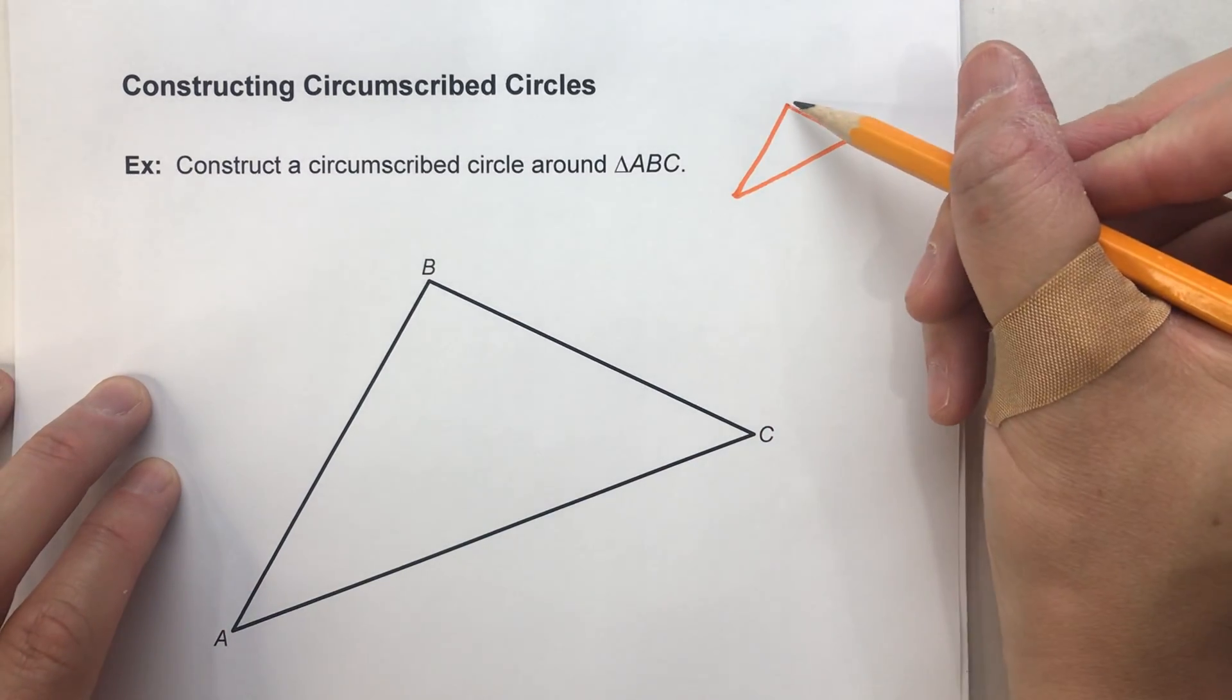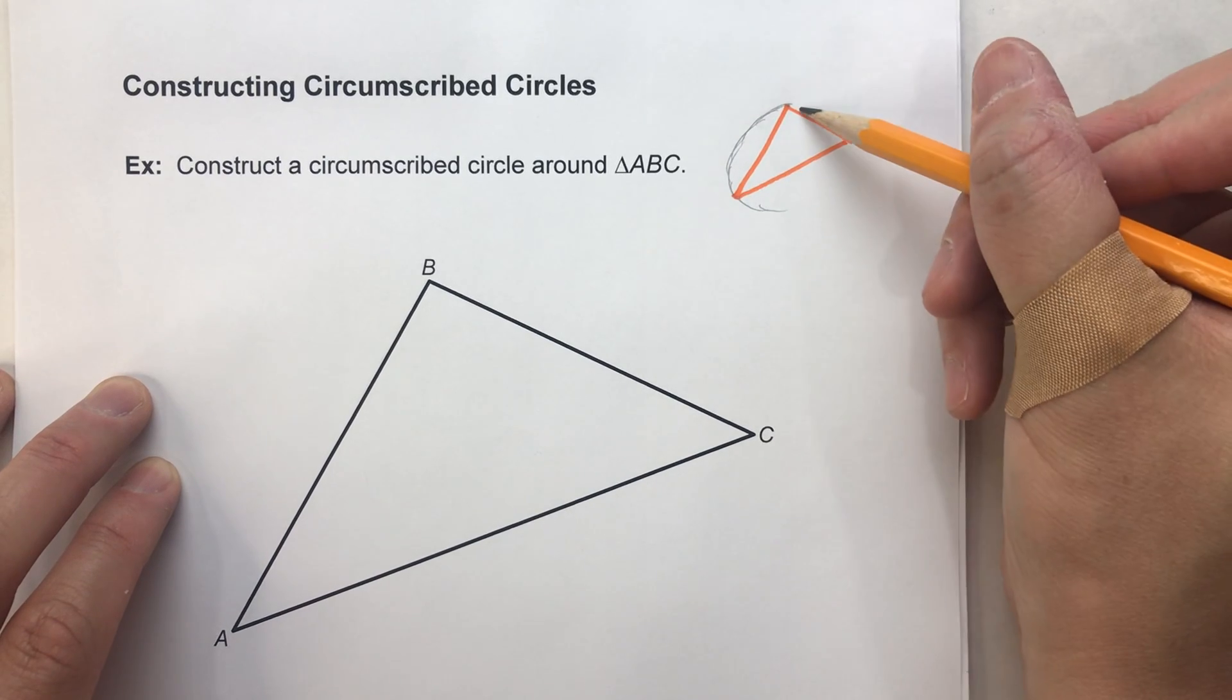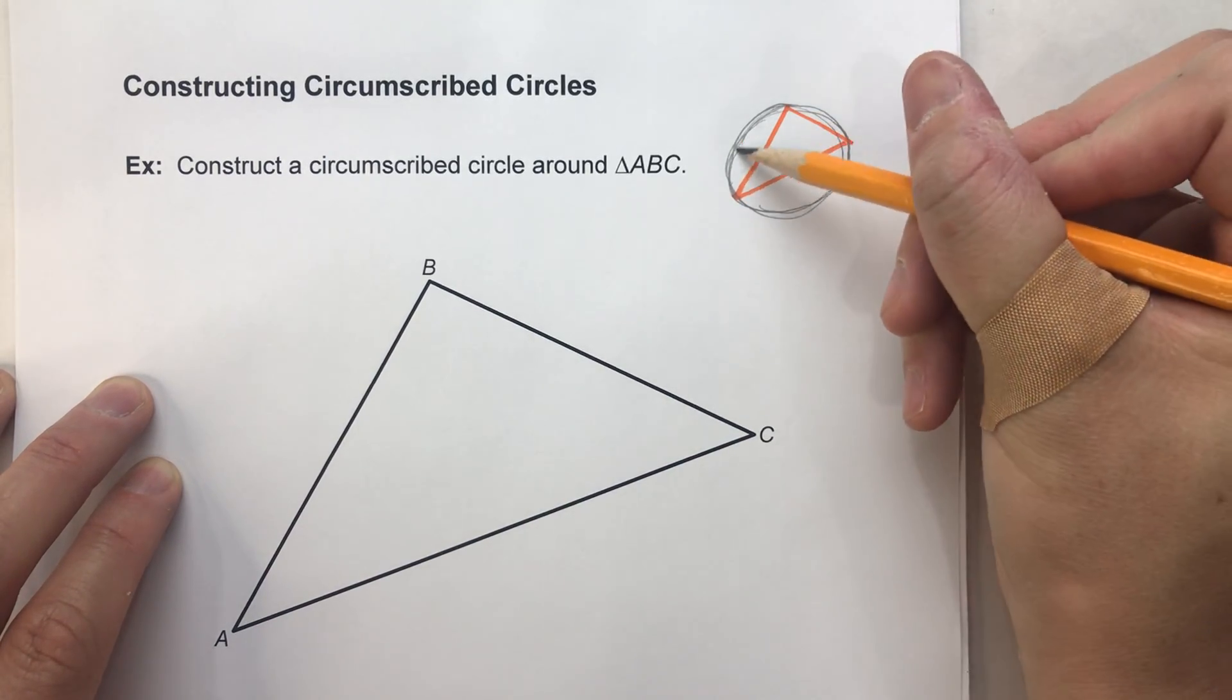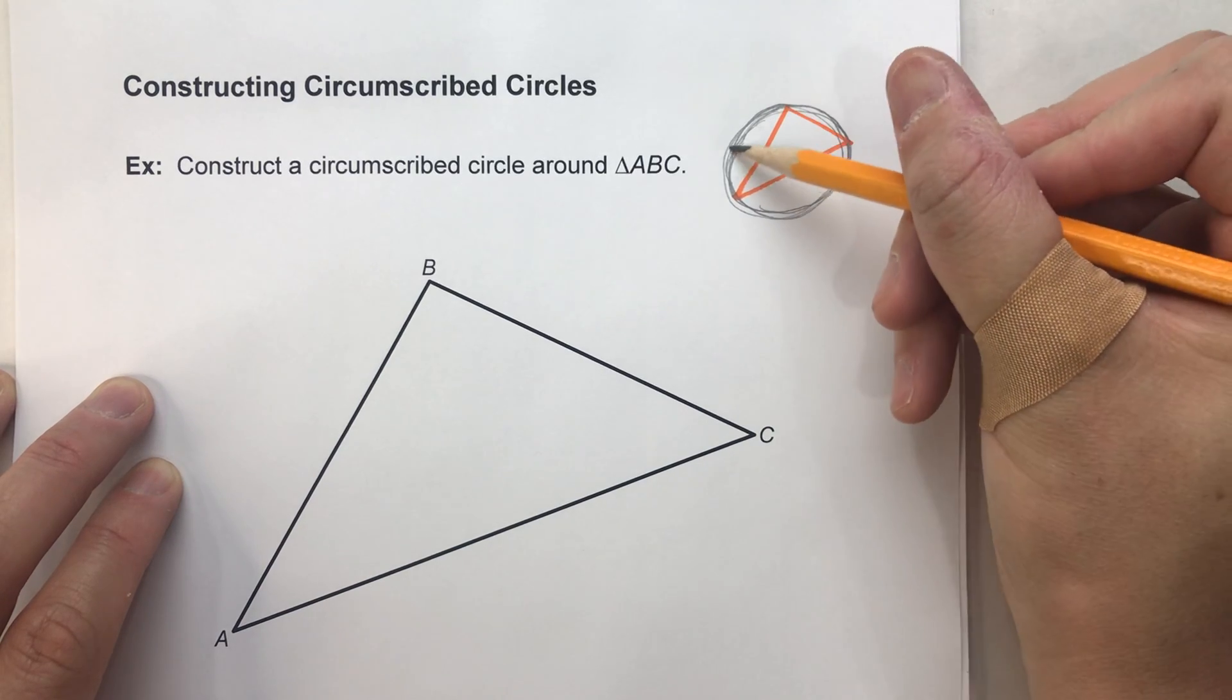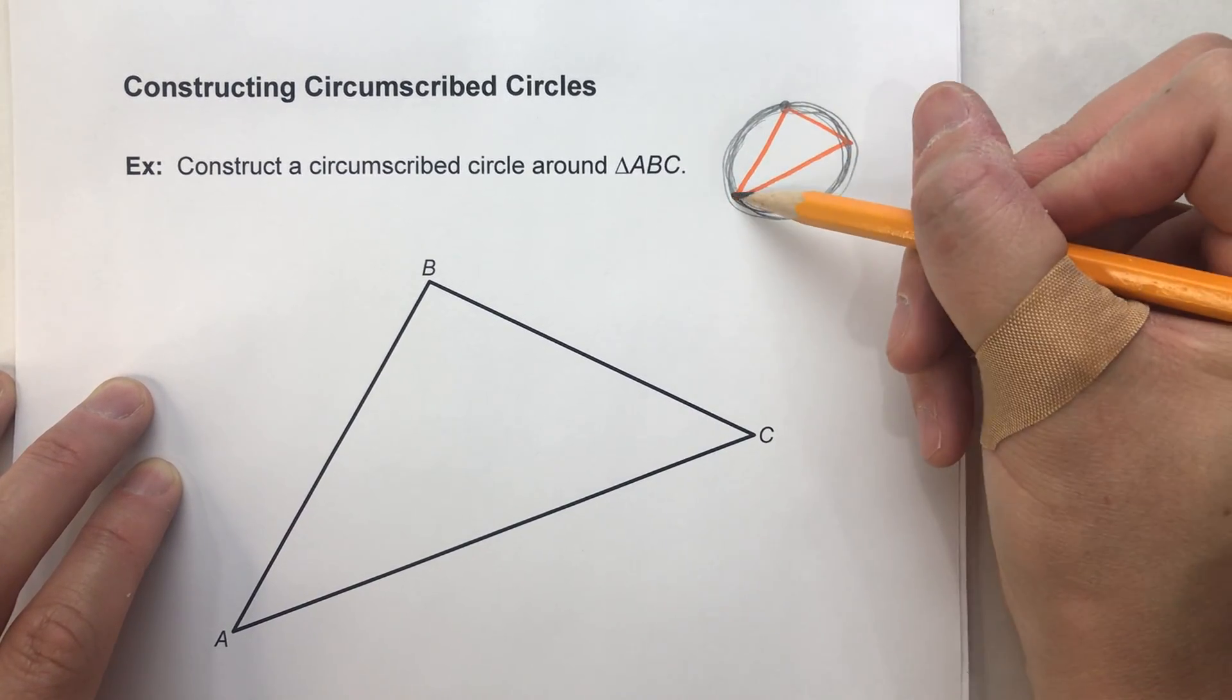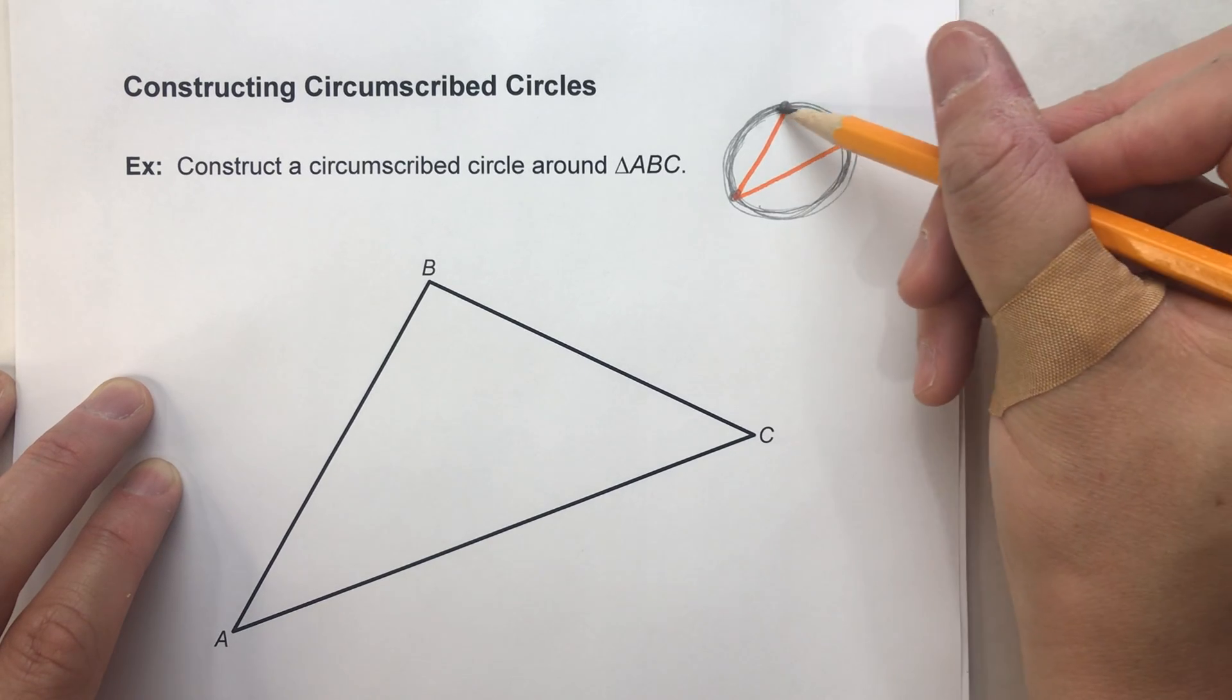Now this is kind of a hard thing to sketch, so I'm going to kind of just freehand it here. This isn't a great sketch, it's getting better, there we go. So you want a circle here, and you'll notice the edge of the circle is going to hit all three vertices, exactly.